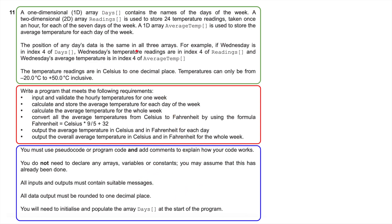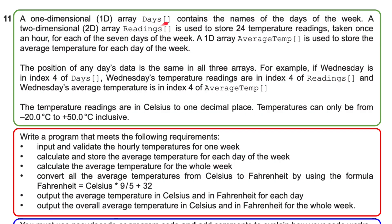A one-dimensional array called 'days' contains the names of the days of the week — Monday, Tuesday, Wednesday, and so on. A two-dimensional array called 'readings' is used to store 24 temperature readings taken once an hour for each of the seven days of the week. Another one-dimensional array called 'average temperature' is used to store the average temperatures for each day of the week — basically taking those 24 readings, dividing them by 24, and populating average temperature for that particular day.